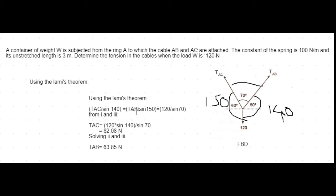So we have: TAC / sin 140° = TAB / sin 150° = 120 / sin 70°. To find TAC, we solve the first and third expressions, giving TAC equals 82.08 Newtons. Solving the second and third expressions — TAB / sin 150° = 120 / sin 70° — we obtain the tension in string AB as 63.85 Newtons.